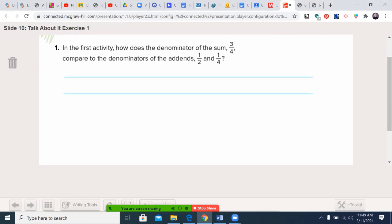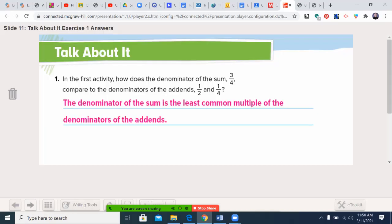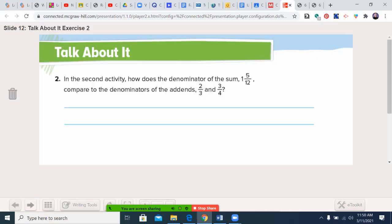In the first activity, how does the denominator of the sum, three-fourths, compare to the denominators of the addends, two and four? Four is the least common multiple of two and four. So that's important to remember as an easy way to do this. Denominator twelve, three and four. Twelve, again, is the least common multiple of three and four. It's also the product of three and four.